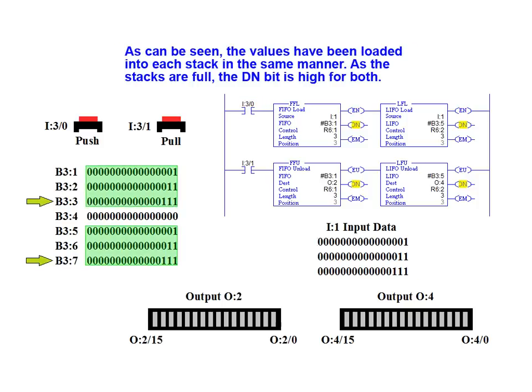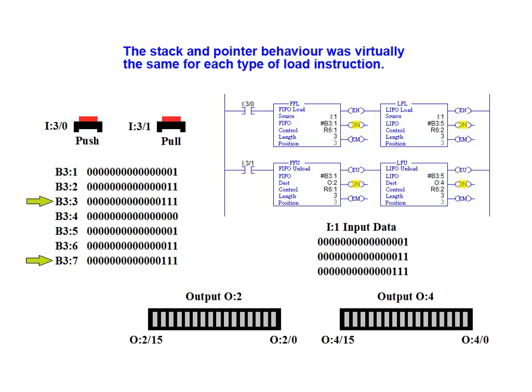As can be seen, the values have been loaded into each stack in the same manner. As the stacks are now full, the done bit is high for both load instructions. The stack and pointer behavior was virtually the same for each type of load instruction.